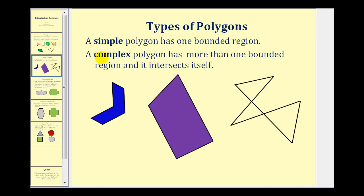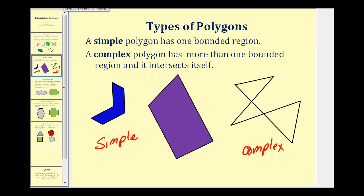Sticking to the previous definition of a polygon, there are two types of polygons. A simple polygon has one bounded region where the sides do not intersect. A complex polygon has more than one bounded region because the sides do intersect. So these two are examples of simple polygons, and here's an example of a complex polygon.